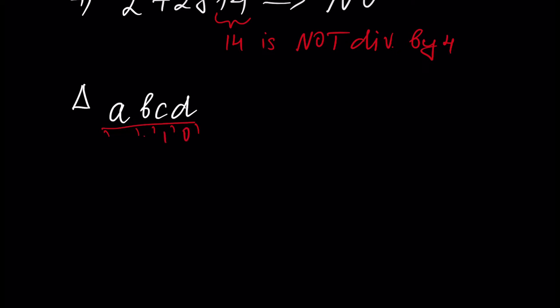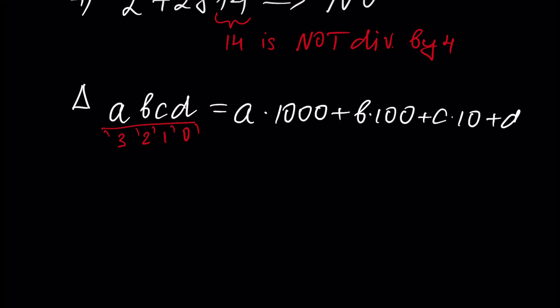The powers are 0, 1, 2, 3. If you don't know decimal representation, look at our previous tutorial. So let's write the decimal representation: it will be A times 1000 plus B times 100 plus C times 10 plus D times 1.